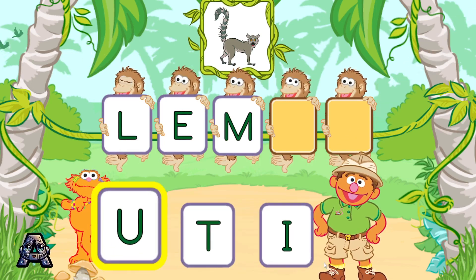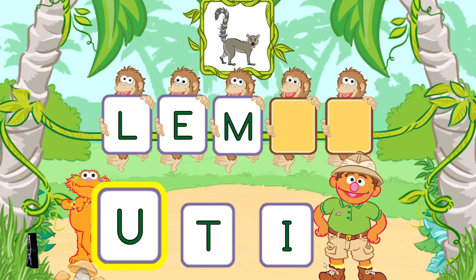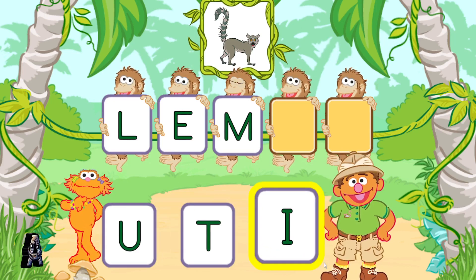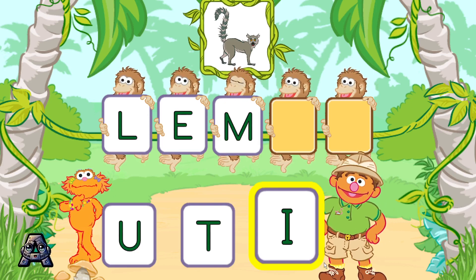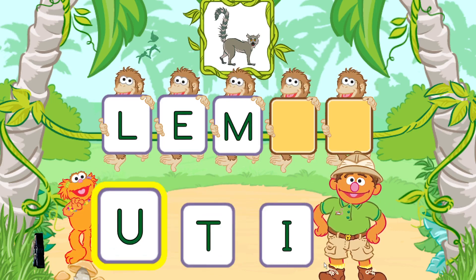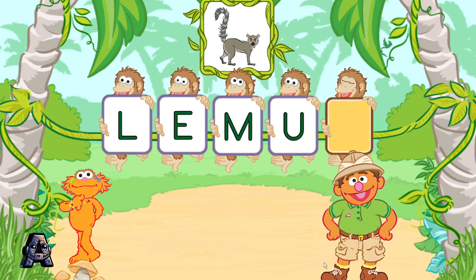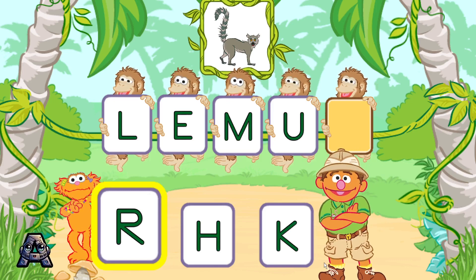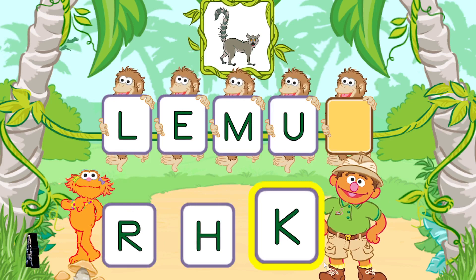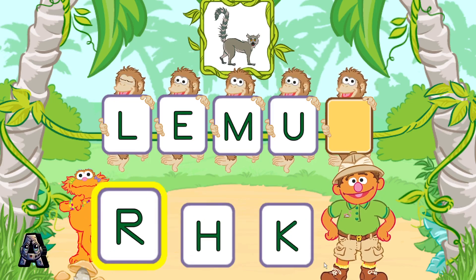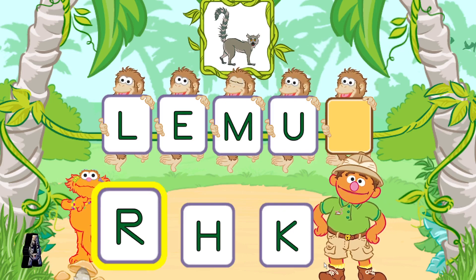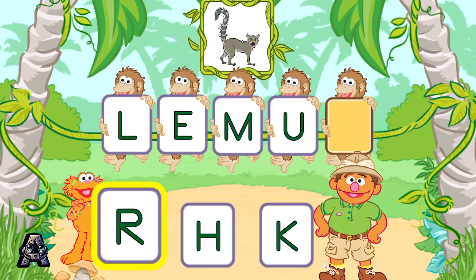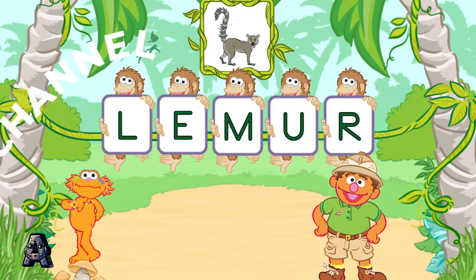Next, pick the letter U. You are so cool! U is the next letter in the word lemur. Now, pick the letter R. If you want to pick this letter, jump or press the 2 button. Way to go! R is the last letter in the word lemur.